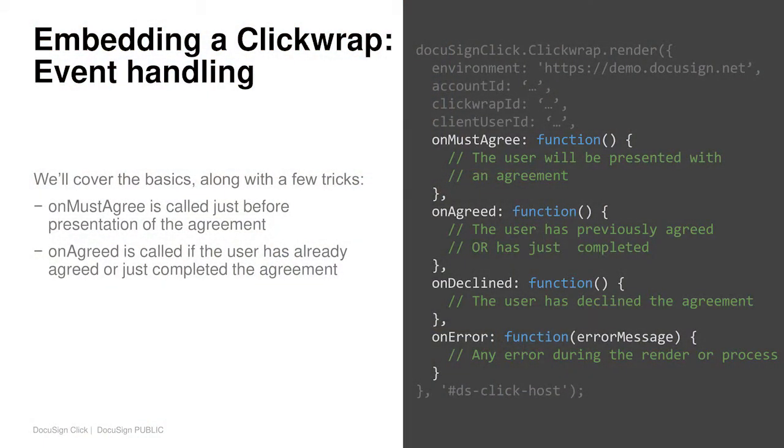These callbacks are actually all optional. You don't need to specify any of them if you don't want to. But if you want to know, for example, when a user needs to agree — like on mustAgree — you can present something different in your UI. When they complete an agreement and you want to show they've logged in successfully, you can do that. Any error we may present through configuration will come through the onError callback.